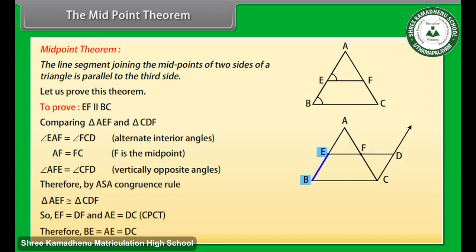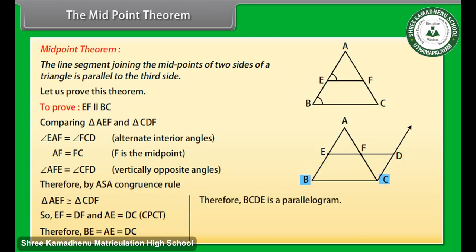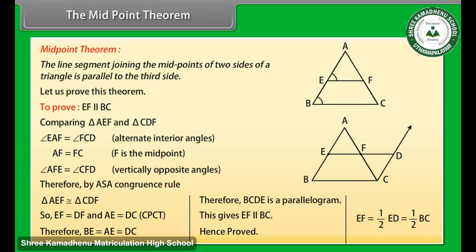Therefore BE is equal to AE which is equal to DC. Therefore BCDE is a parallelogram. This gives EF parallel to BC — hence proved. Also, EF is equal to one half ED which is equal to one half BC.